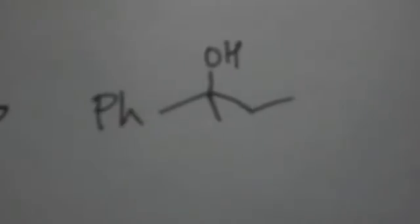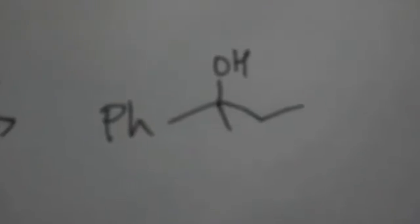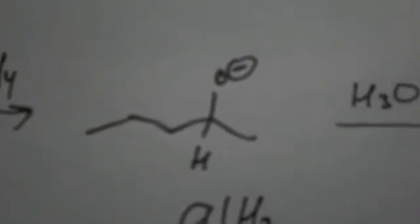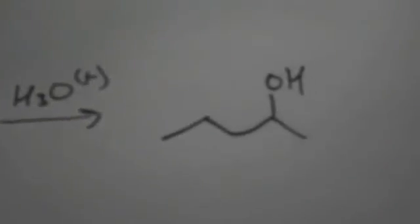What happens here is the oxygen takes the hydrogen from the lithium aluminum hydride, which would lead us to this compound, and then H3O plus is used in order to neutralize the oxygen and get the alcohol group on there.